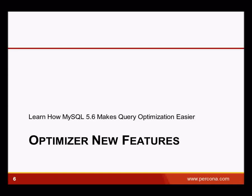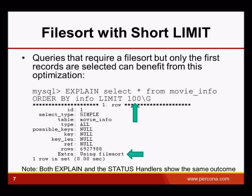Let's start with the first example of new features of the 5.6 optimizer. The first one is very easy but very effective: faster execution of queries using filesort with a short LIMIT. In queries like SELECT * FROM movie_info ORDER BY info LIMIT 100, we want to order by a column that is not indexed. There are no indexes at all to speed up this query because it returns all results. So in both 5.5 and 5.6, a reordering step before sending results back to the client is needed.